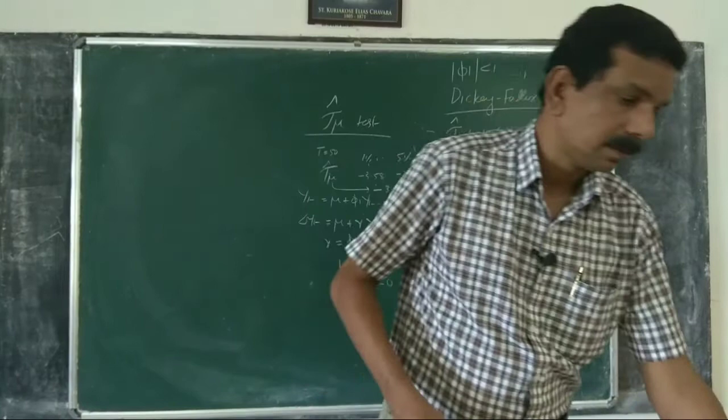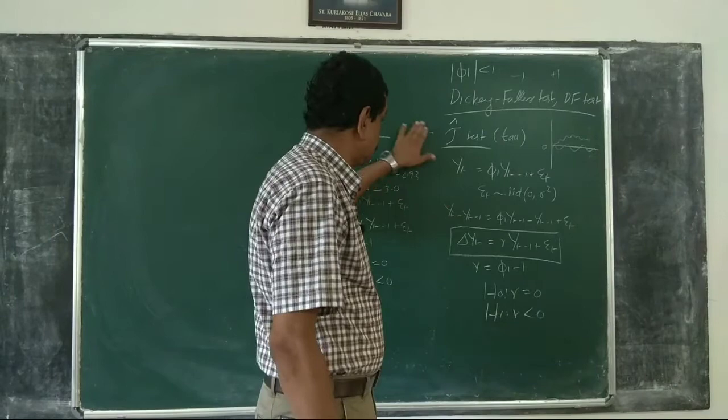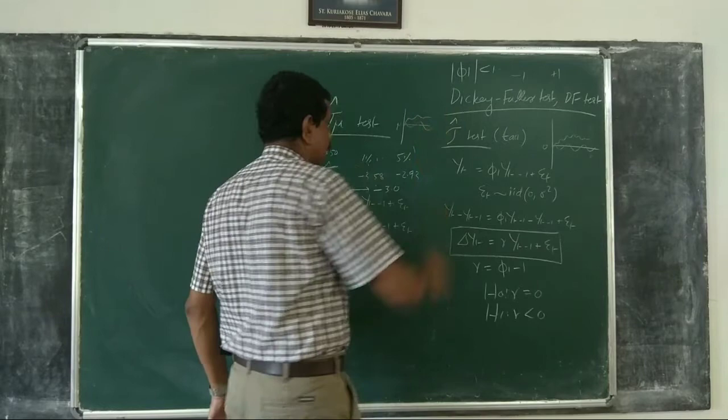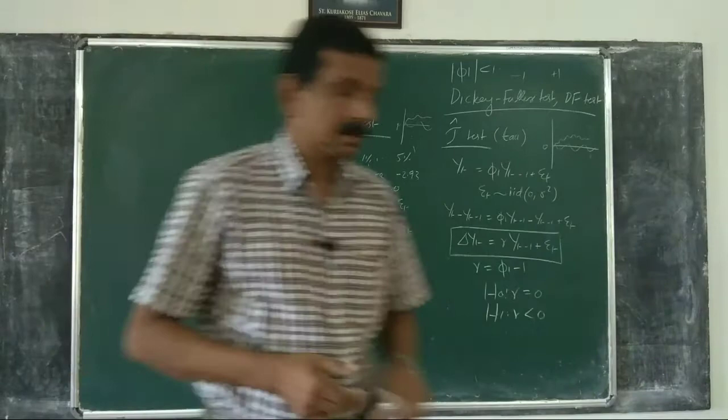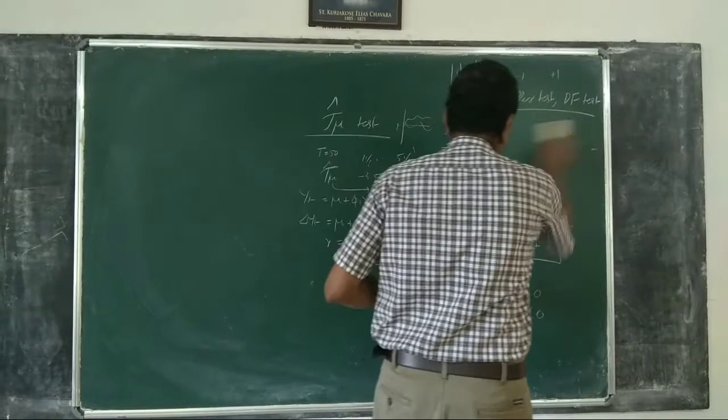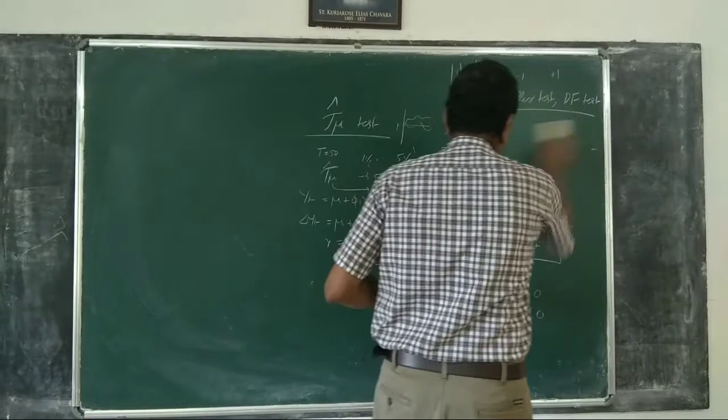So if you have a process whose mean is not equal to zero, you adopt tau-hat mu as the test statistic. We now consider the third variant: tau-hat beta.